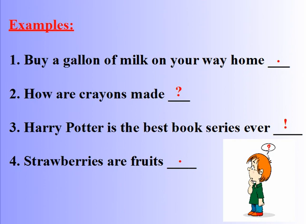Here are some examples. Number 1: 'Buy a gallon of milk on your way home.' This sentence is giving a command, so we put a period at the end. Number 2: 'How are crayons made?' We are asking a question using the WH word 'How,' so we put a question mark at the end. Number 3: 'Harry Potter is the best book series ever!' This sentence expresses a strong feeling, so we put an exclamation mark at the end. Number 4: 'Strawberries are fruits.' This sentence is simply stating a fact, so we put a period at the end.